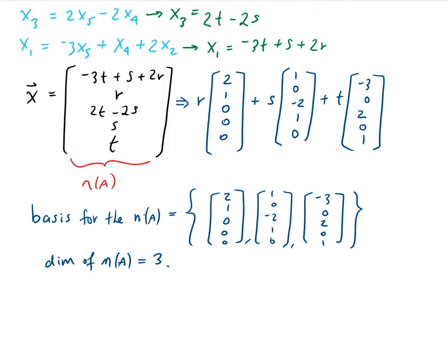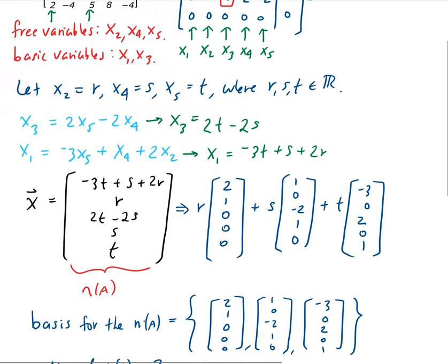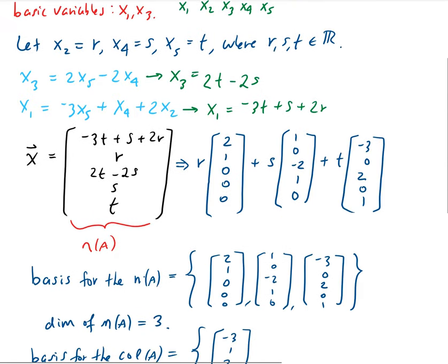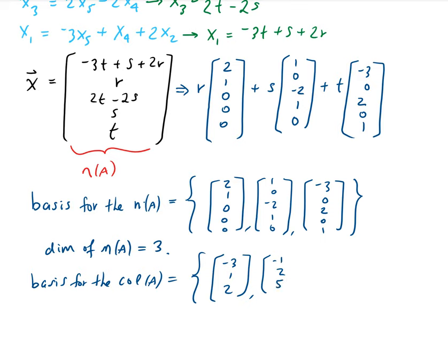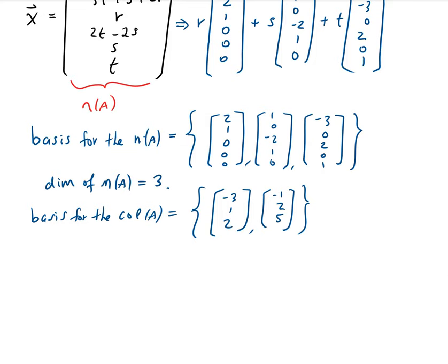The basis for the column space of A is going to be: the first column, which is (negative 3, 1, 2), and the third column, which is (negative 1, 2, 5). So that forms the basis for the column space of A, and since there are two vectors, that is the dimension of the column space.